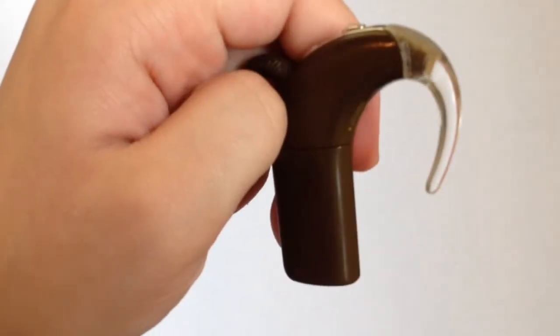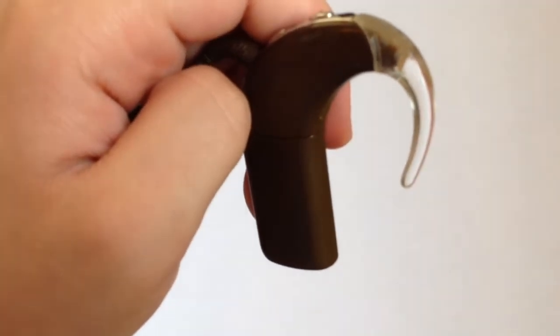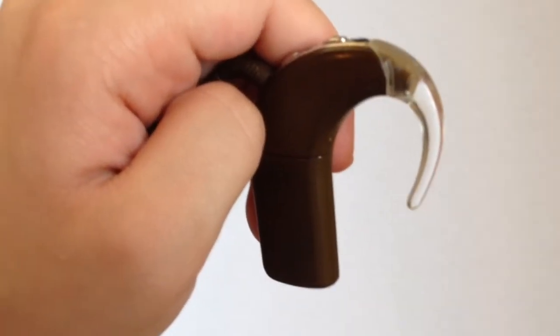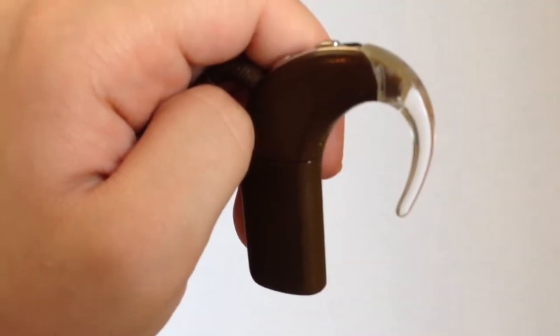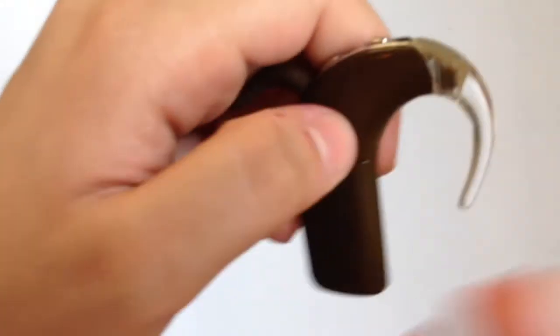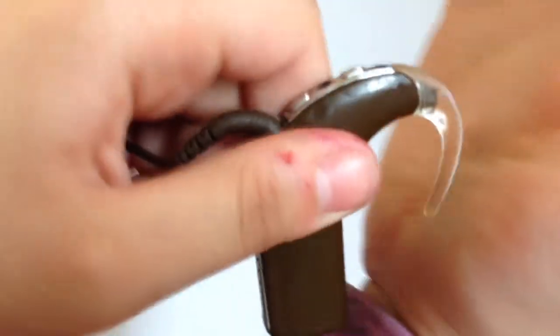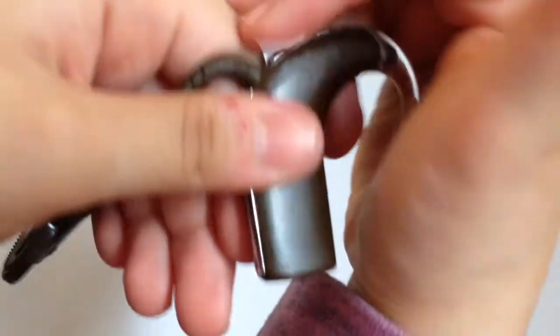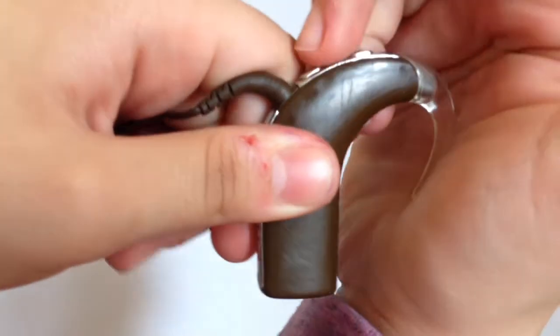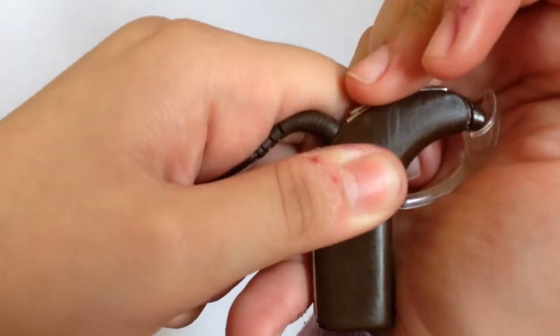So this first method I'm going to show you is not the safest way to go about it, but it works. First, I put my palm on the hook like this, okay? And hold the rest of the cochlear implant like this. And then I just snap it off like that. And it snaps off.